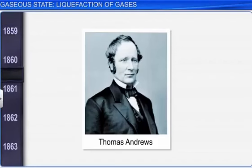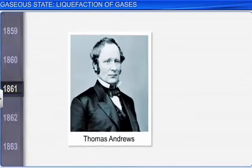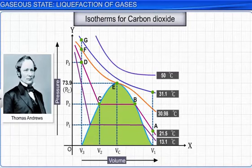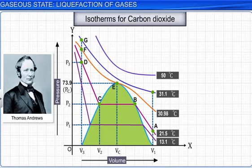In 1861, Andrews studied these critical phenomena of carbon dioxide. In his experiments, he studied the effect of pressure on volume, at different temperatures for carbon dioxide. He plotted this variation in volume and pressure, at constant temperature, called isotherms, as shown in the graph.